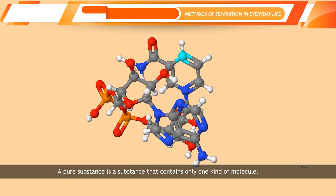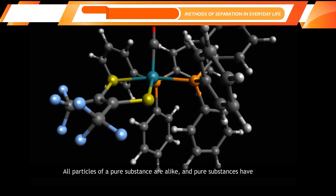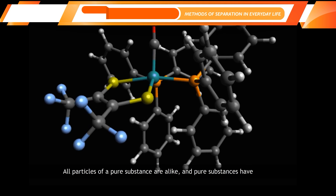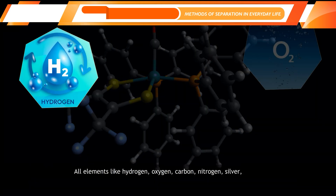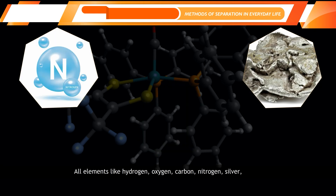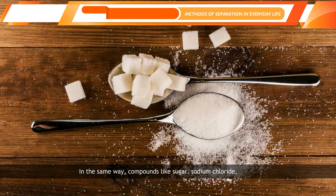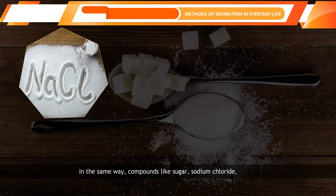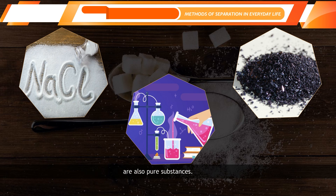Pure Substances. A pure substance is a substance that contains only one kind of molecule. All particles of a pure substance are alike, and pure substances have a definite and constant composition. All elements like hydrogen, oxygen, carbon, nitrogen, silver, copper, gold, etc. are pure substances. In the same way, compounds like sugar, sodium chloride, potassium permanganate, water and carbon dioxide are also pure substances.